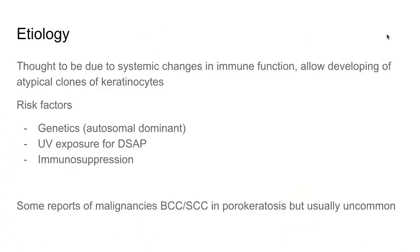In terms of etiology, it's thought to involve genetics — it's autosomal dominant, so one or both parents may be affected. UV exposure is important for disseminated superficial actinic porokeratosis, and immunosuppression also plays a role.